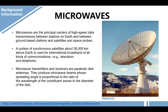Microwaves are principal carriers of high-speed data transmissions between stations on Earth and between ground-based stations and satellites and space probes. A system of synchronous satellites about 36,000 kilometers above Earth is used for international broadband of all kinds of communications. Microwave transmitters and receivers are parabolic dish antennas. They produce microwave beams whose spreading angle is proportional to the ratio of the wavelength of the constituent waves to the diameter of the dish.